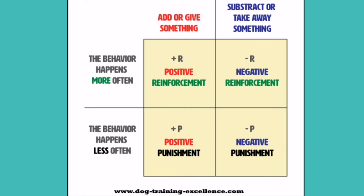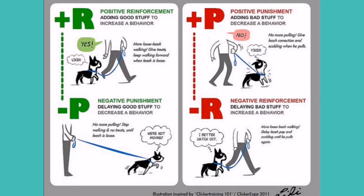Negative reinforcement is removing something unpleasant to strengthen the behavior. An example would be turning down your music to a quieter setting to calm your bunnies down. Positive punishment is adding something, such as a command like 'no' or something more physical such as tugging your dog's lead back when they are pulling, to try and stop the bad behavior and teach them that that behavior is undesirable.